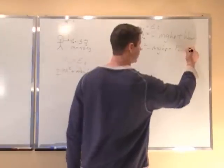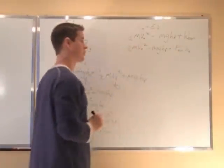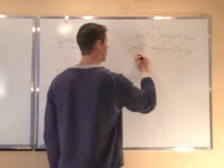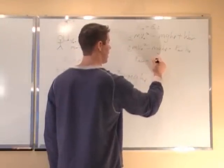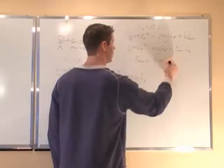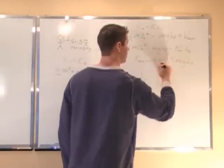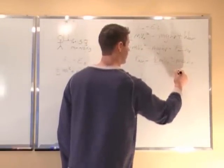So we can just call that height hf because that's just the distance it goes. So we can divide over, so we find the force by air resistance is 1/2 m v-naught squared minus m g h final divided by h final.